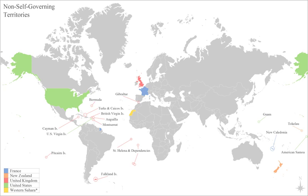Malta was a British protectorate and later a colony from the French Revolutionary Wars in 1800 to independence in 1964. Mozambique was a colony of Portugal since the 15th century, independent since 1975. The Philippines was previously a colony of Spain from c. 1565 to 1898, then a colony of the United States from 1898 to 1946, achieving self-governing Commonwealth status in 1935. Puerto Rico has been a colony of Spain from 1493 to 1898 and of the United States from 1898 to the present. Somalia was a colony of Italy and Britain from the late 1800s to 1960, when the Trust Territory of Somaliland united with the former British Somaliland to form the Somali Republic.